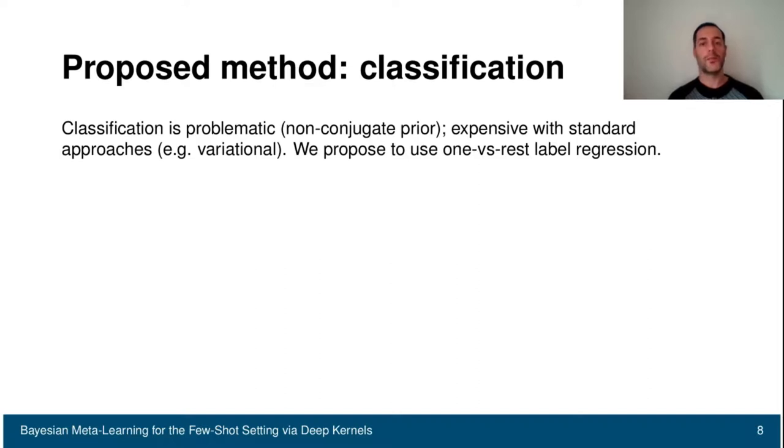What we propose is to use a one versus rest scheme through label regression. What we do is fit one Gaussian process for each one of the different classes, and treat the classification case like a regression problem.